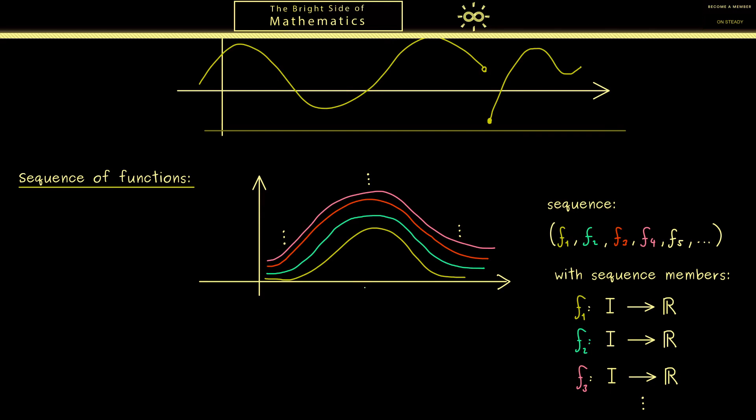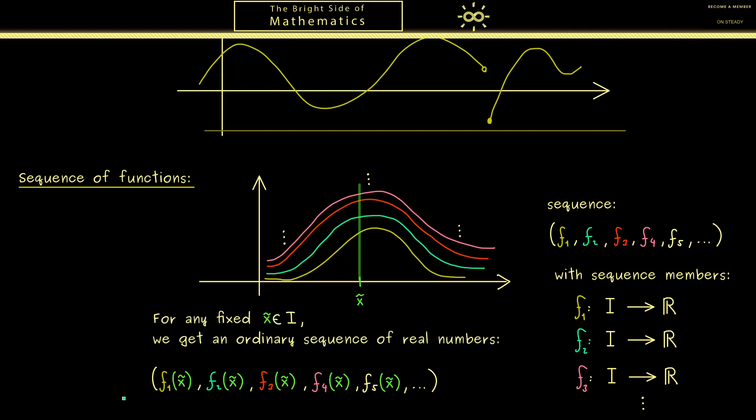In fact, we immediately get a connection to our ordinary sequences when we fix a given x. So let's call it x tilde here. And then we can just look at the values for all the functions at the given point x tilde. Therefore, what we get is an ordinary sequence of real numbers. Hence at this point you shouldn't have any problems dealing with such a sequence. For example, you could ask: is this sequence bounded, or is it monotonically increasing, or is it even convergent. However, now we can ask even more because all of these things can depend on the given x tilde.